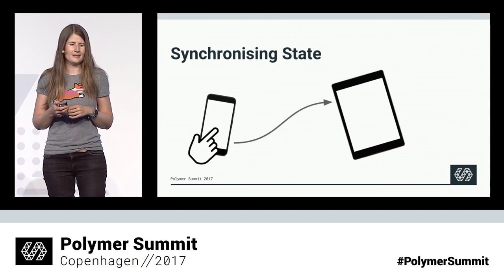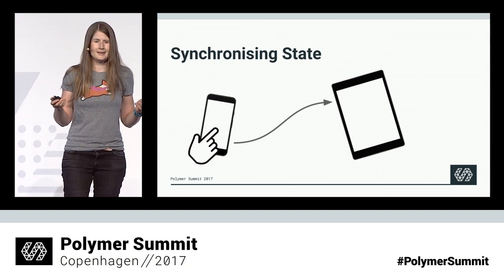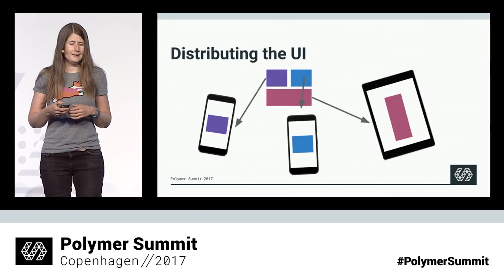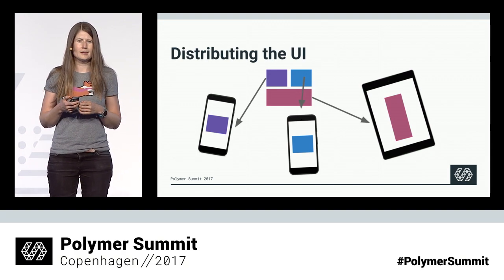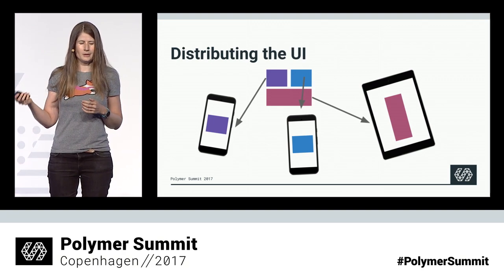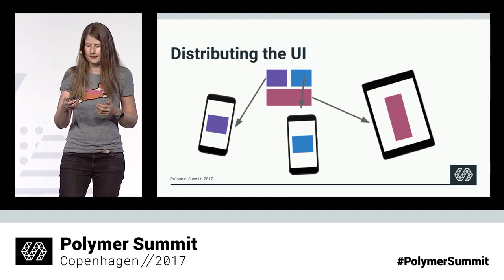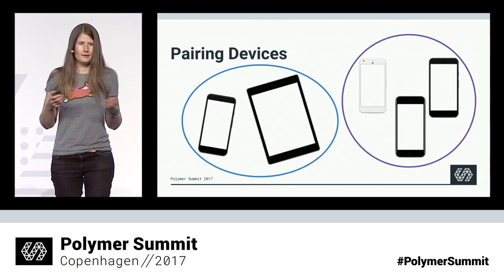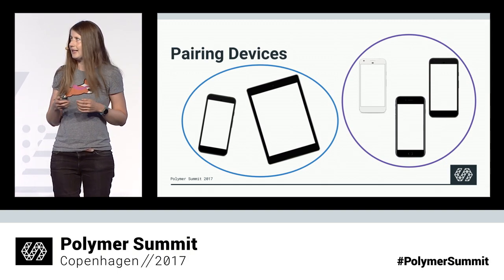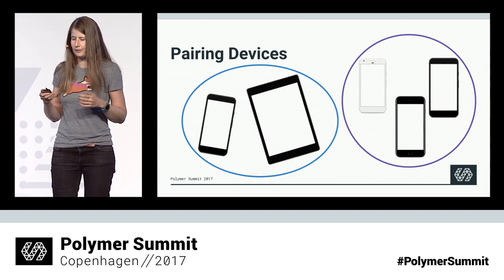First, state needs to be synchronized across devices. If the user clicks a button on the phone, the other connected devices need to be informed that something has changed. Second, the UI needs to be distributed across multiple devices — you need to decide what part of the UI should be shown on what device, and for that you also need information on the kinds of devices involved. Third, the devices need to be connected somehow — there needs to be a way to tell the system which devices are working together and which are forming a group.